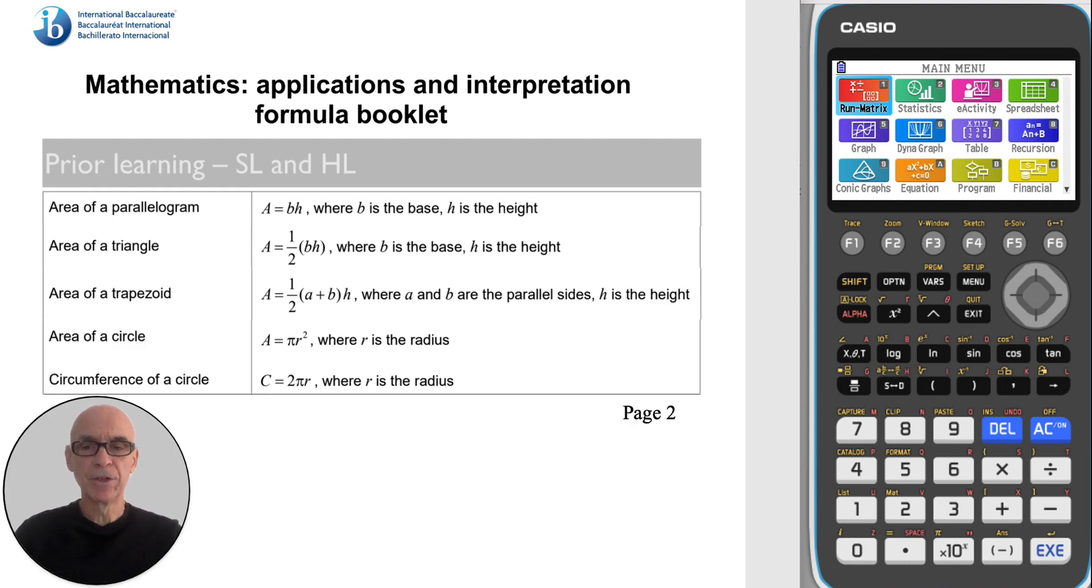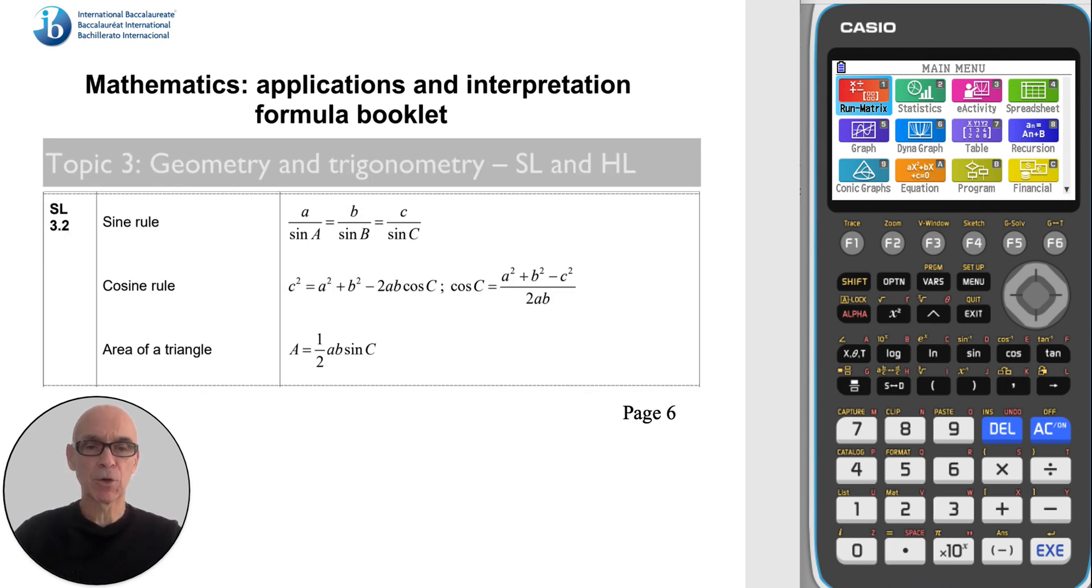The formulas for the area of a triangle appear on page 2 and page 6 of your formula booklet.